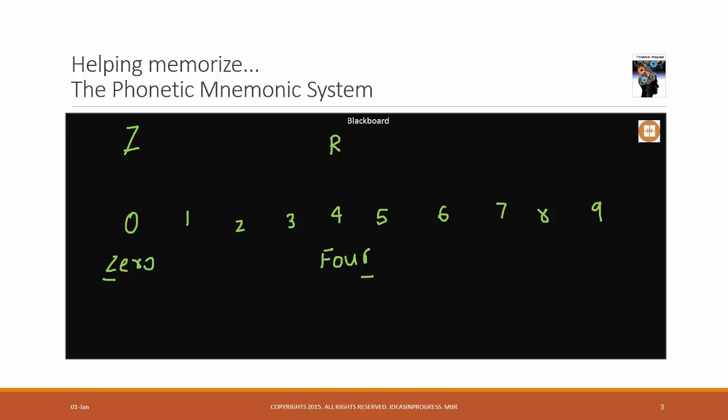For digits 1, 2 and 3, the memory aid was about the downstrokes. There is one downstroke for 1, two downstrokes for 2, and three downstrokes for 3. And what we also have is one downstroke for the alphabet T, two downstrokes for the small letter N, and three downstrokes for the alphabet M.